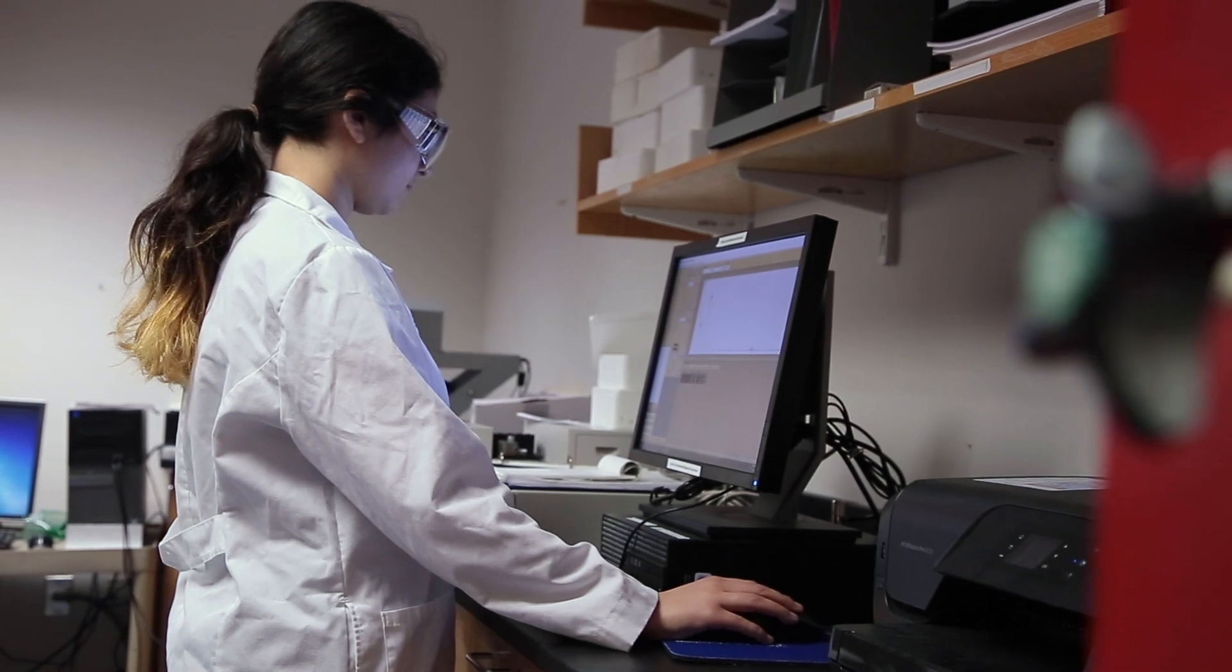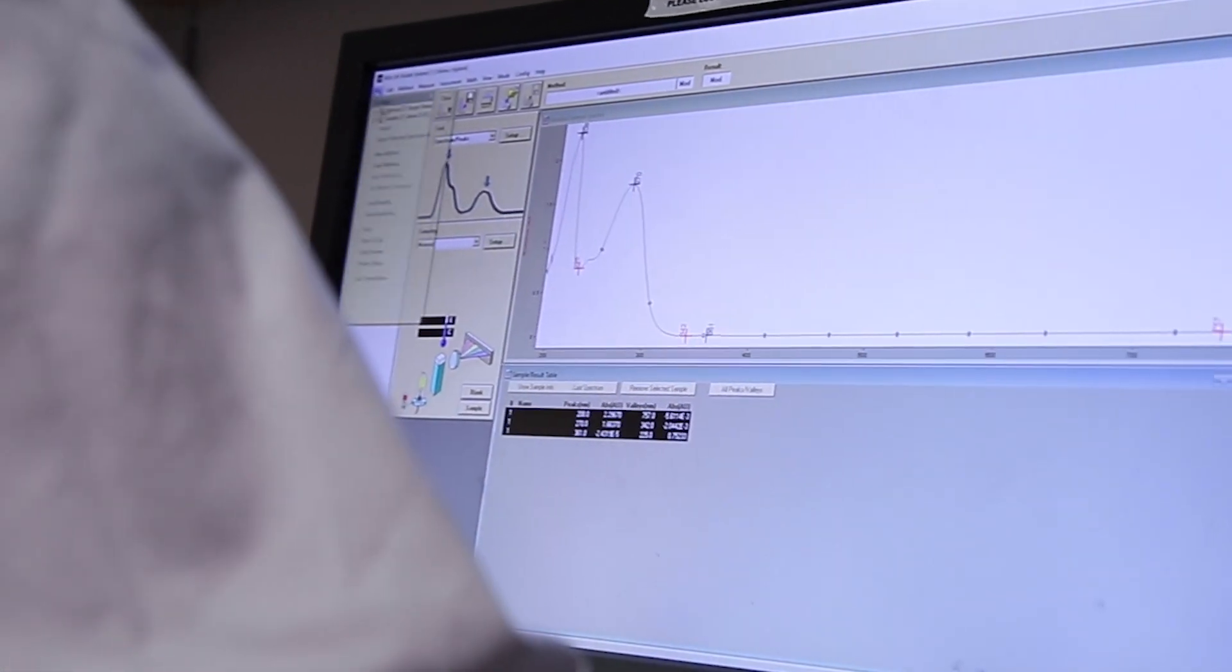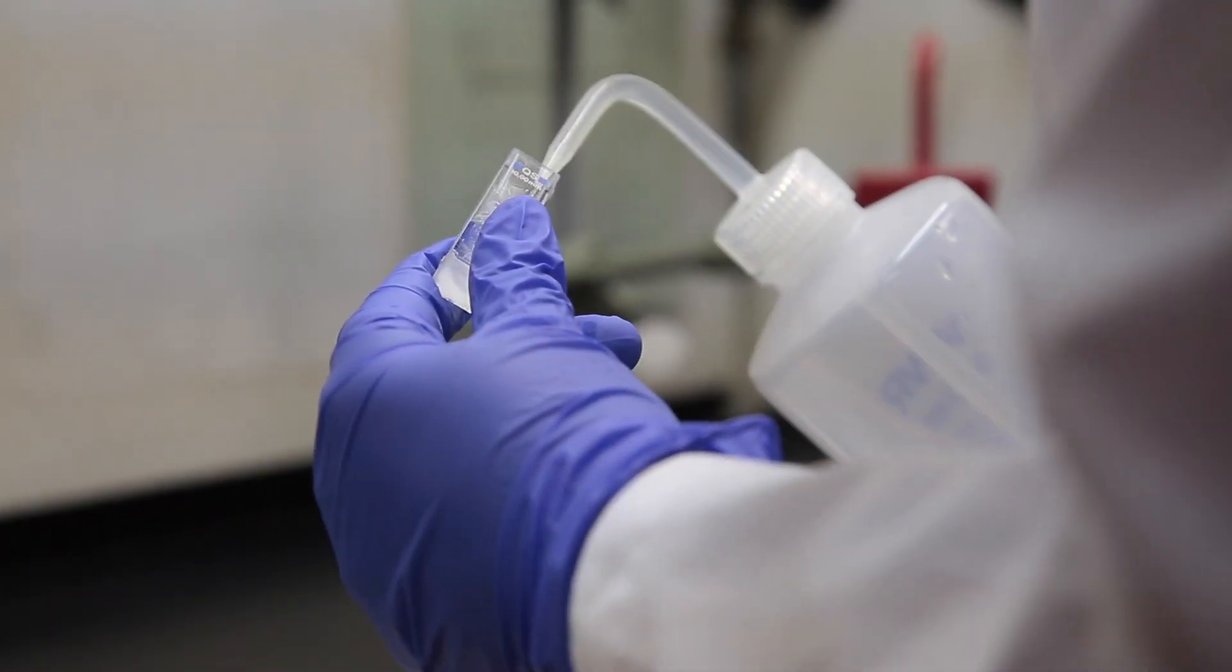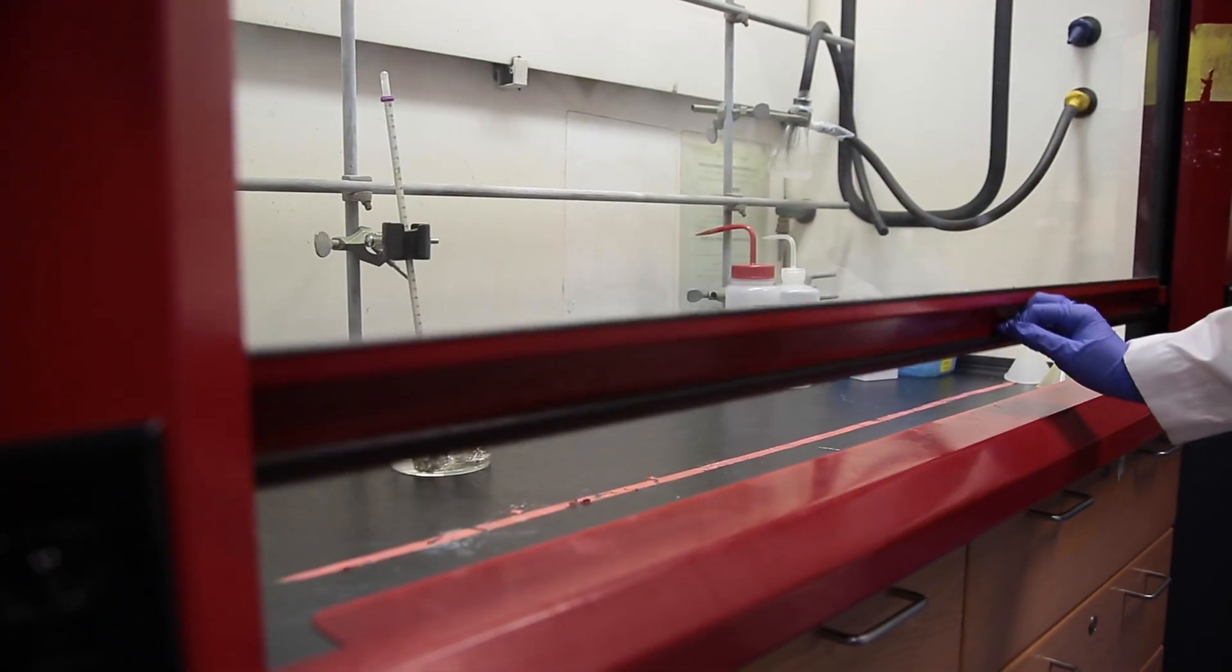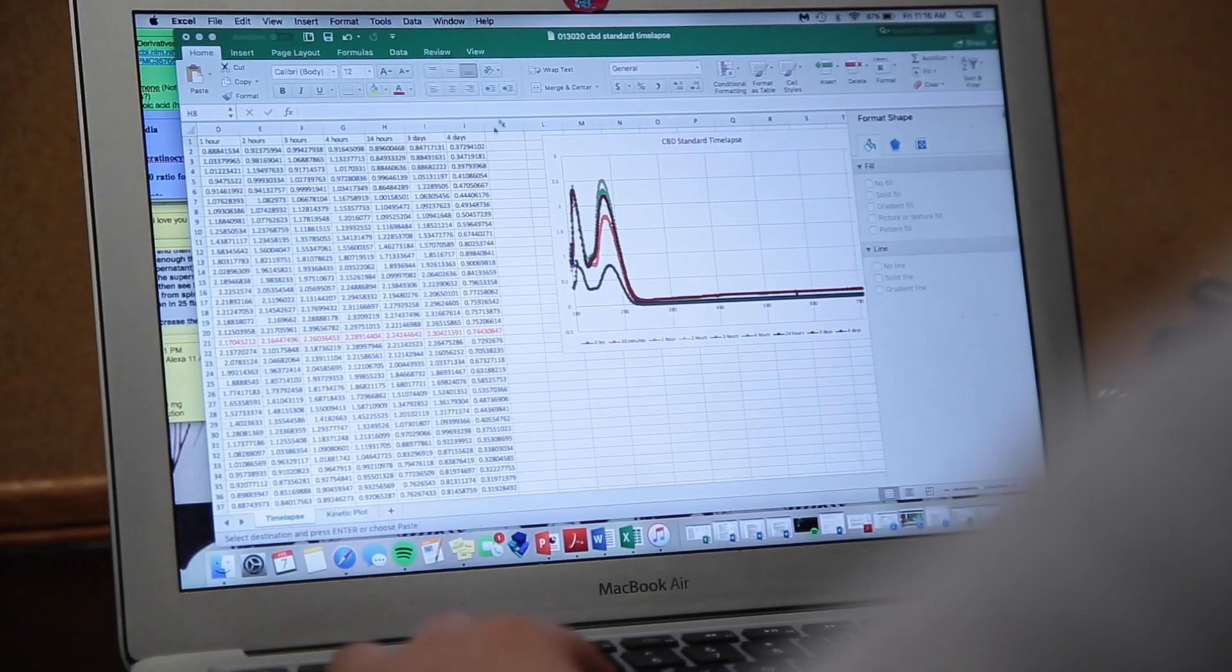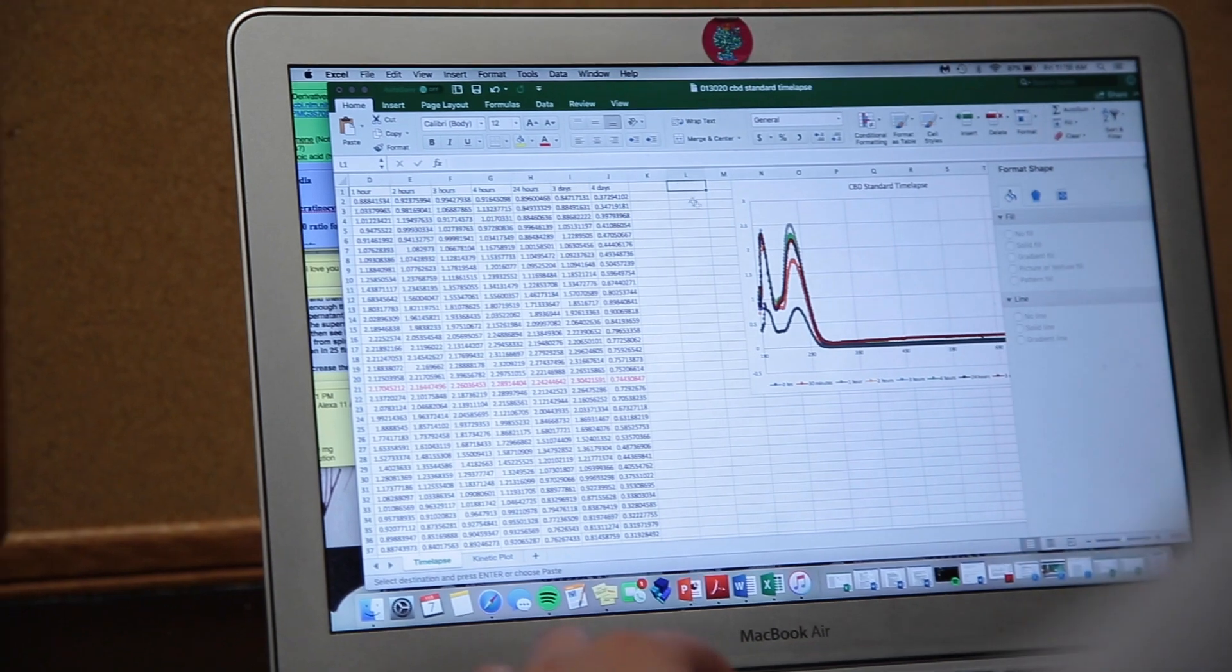You ingest CBD in an oil form, you could take it in a pill, but what does that really turn into once you add it into an acidic environment like your stomach? That's what I'm testing. I'm trying to figure out the rate at which that occurs. Are the percentages of everything true? I initially started this project to figure that out.